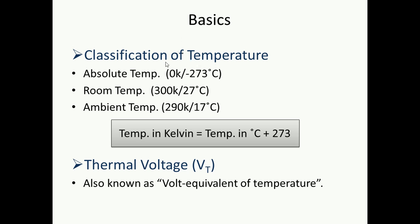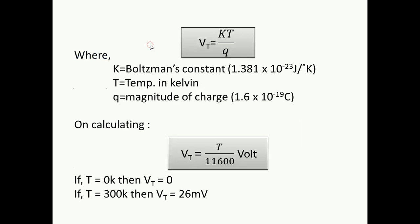Next is thermal voltage, also known as volt equivalent of temperature. Your temperature can be measured in terms of voltage — that is why it is called volt equivalent of temperature. We have a very important formula: thermal voltage VT equals KT divided by Q. Here K is your Boltzmann constant, T is temperature always taken in Kelvin, and Q is the magnitude of charge. The values for all these constants are provided, and on calculating you get thermal voltage equal to T divided by 11,600 Volt.